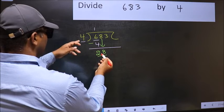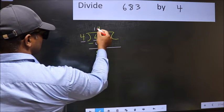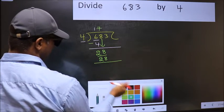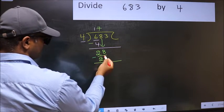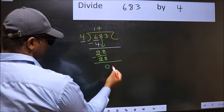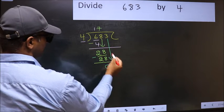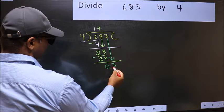When do we get 28 in the 4 table? 4 sevens is 28. Now you should subtract: 28 minus 28 is 0. After this, bring down the next number. So 3 down.